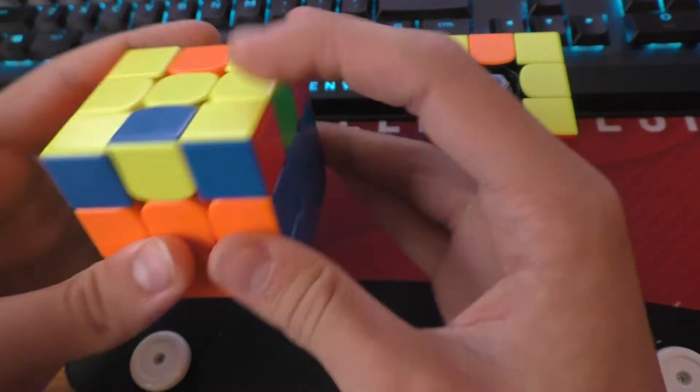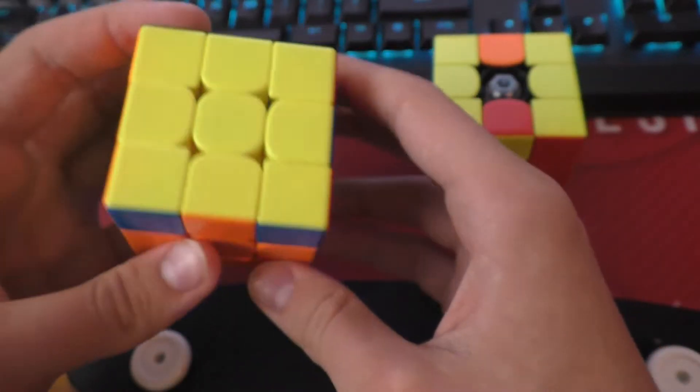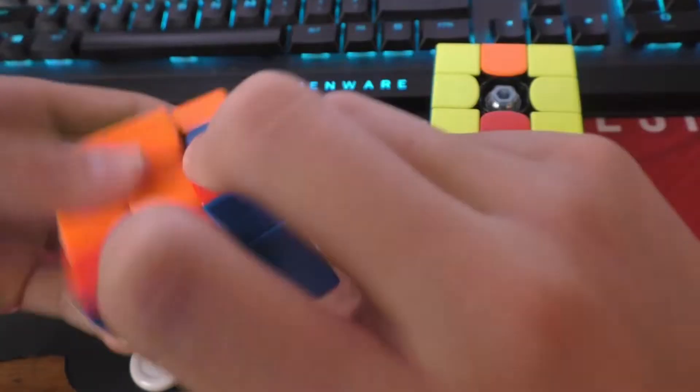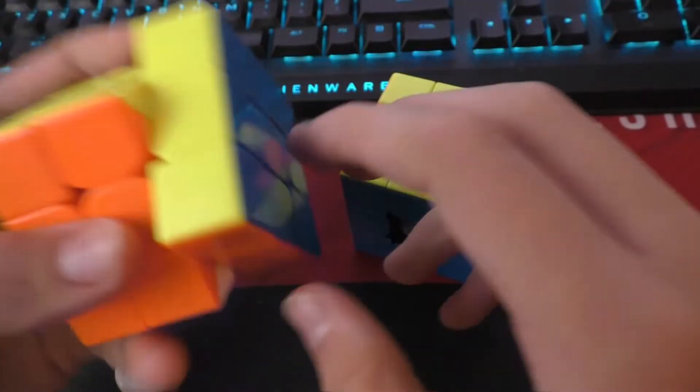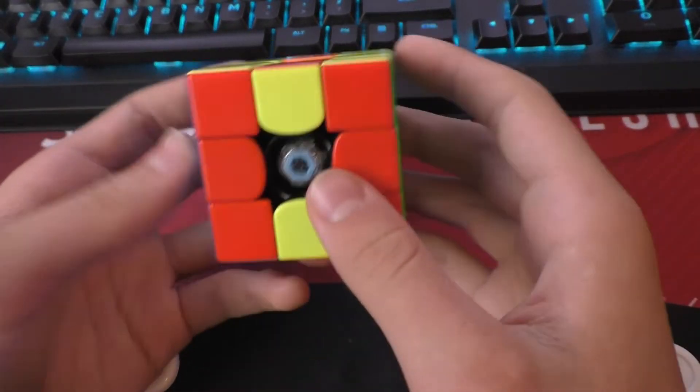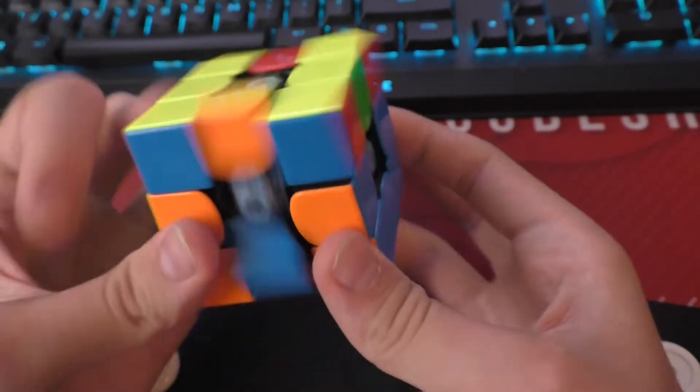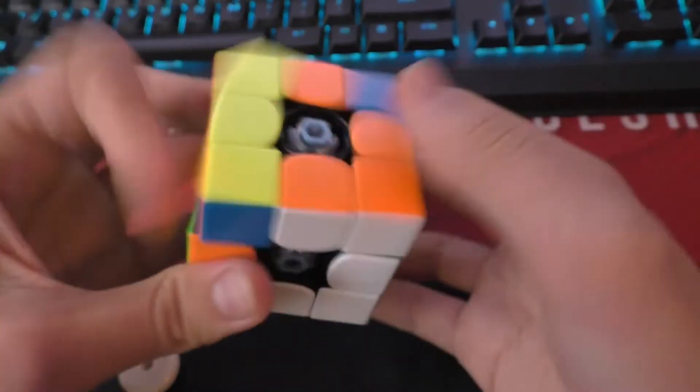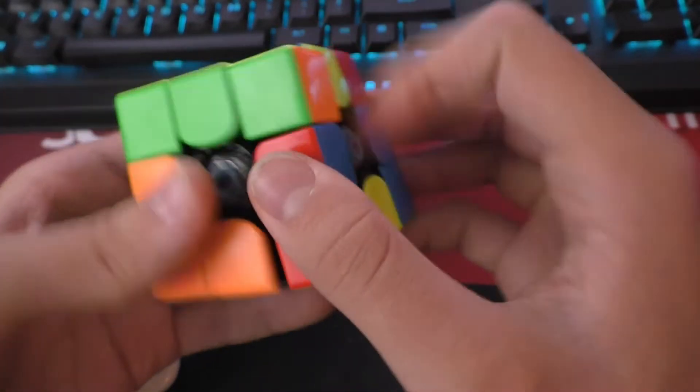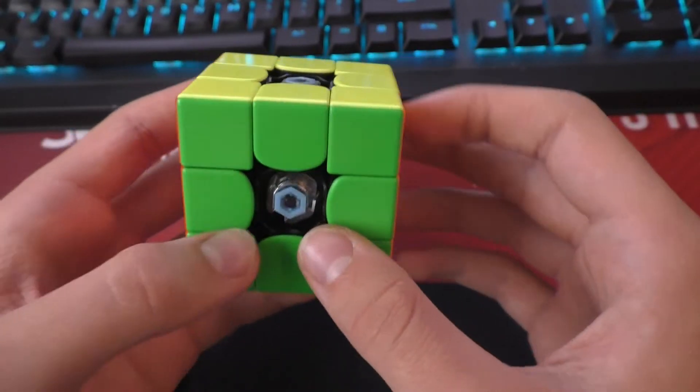You can solve the regular Rubik's cube. And that was good. And now I can solve the void cube. And there you go, parity is solved.